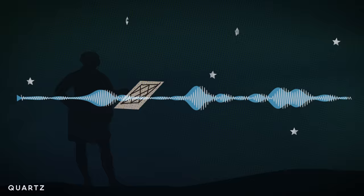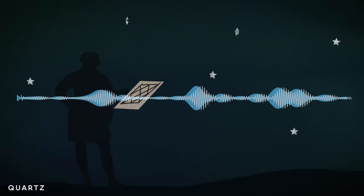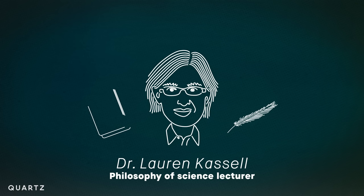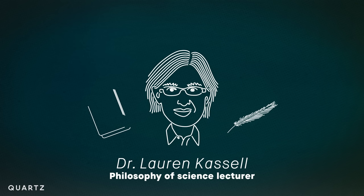This story starts around 500 years ago. Astrology and medicine had a long, long marriage. That's Dr. Lauren Cassell, a philosophy of science lecturer at the University of Cambridge. Cassell studies some of the earliest surviving medical case books written around the year 1600.